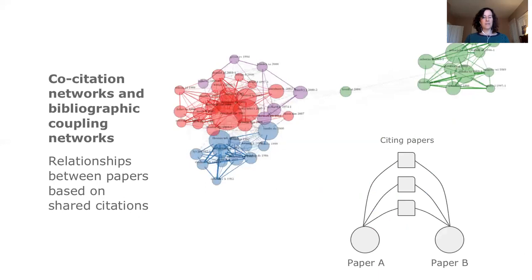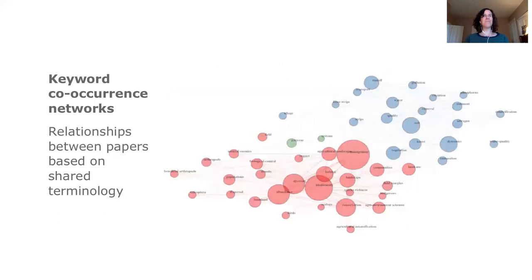We can also study the relationships between publications based on cited references, typically done through co-citation networks or bibliographic coupling networks. Additionally, you can look at bibliographic networks based on the occurrence of similar terminology. These keyword co-occurrence networks can indicate topic-based communities, allowing for further analysis of collaboration and citation behavior based on topics derived using text mining models, and can also show us new terminology to improve search and discovery of relevant research.